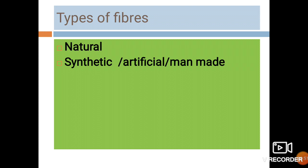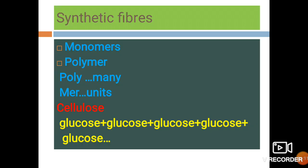Synthetic fibers are called artificial fibers or man-made fibers. These are prepared artificially by human beings with the help of chemicals. That is why synthetic fibers are called artificial fibers or man-made fibers.